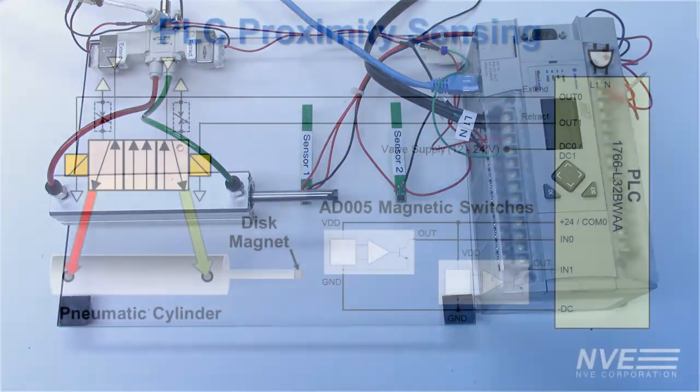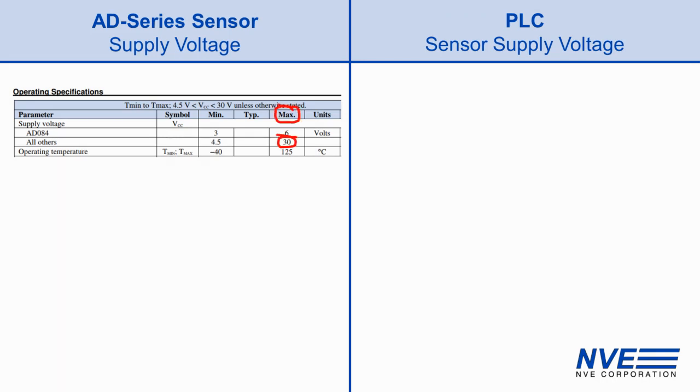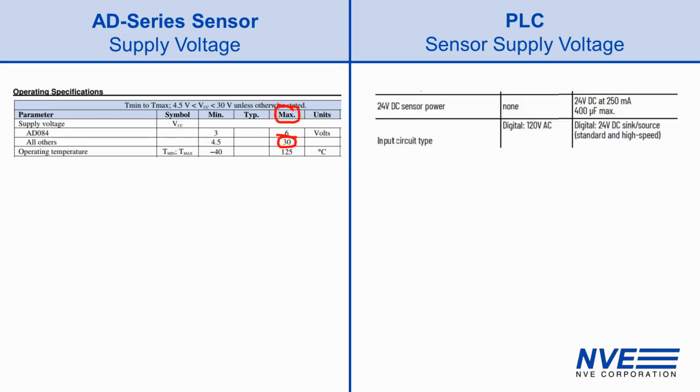Here's the demo wiring diagram. PLCs need robust sensors and the AD series magnetic switch specs are ideal for PLCs. The sensors are rated at 30 volts so they can be powered directly from the PLC's 24 volt sensor supply, unlike many sensors that need 5 or 3.3 volts.